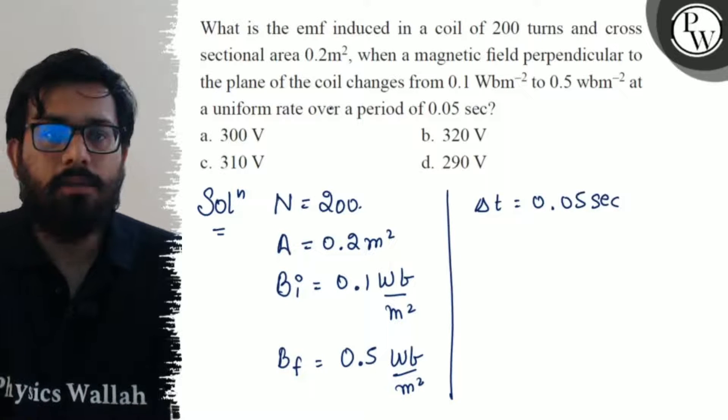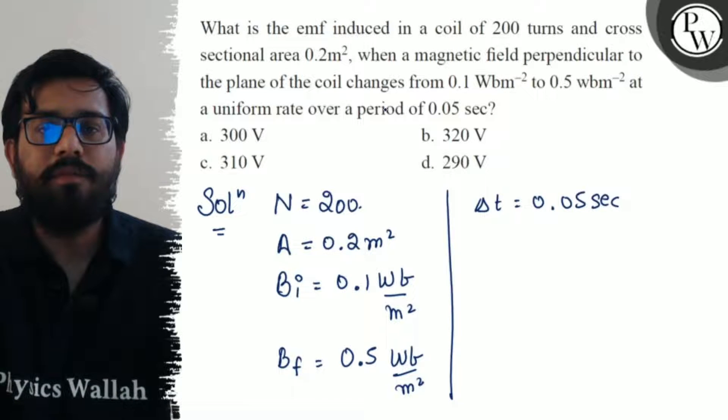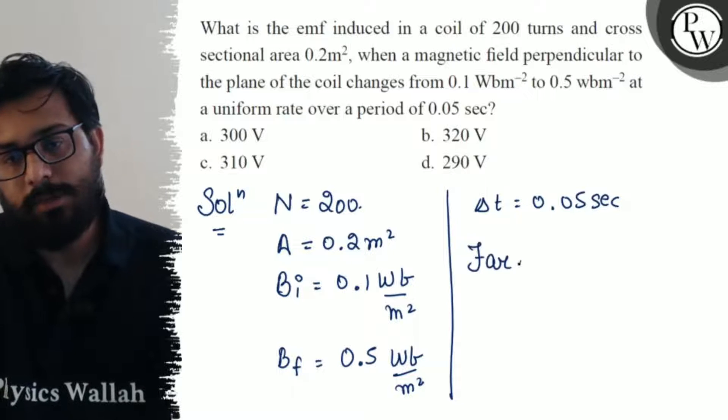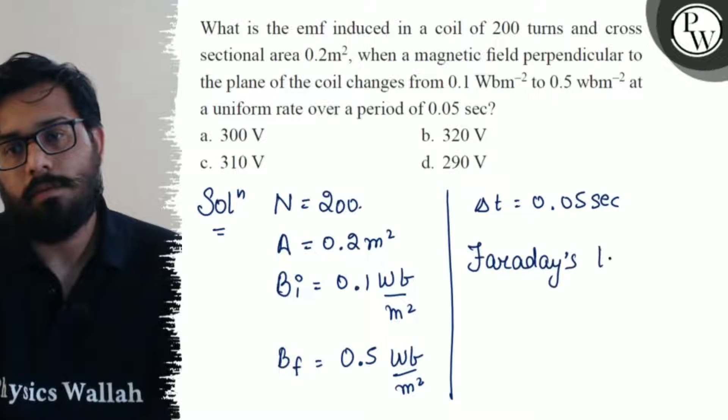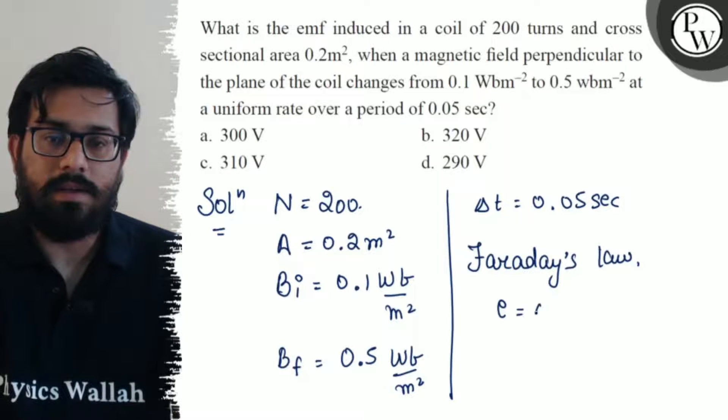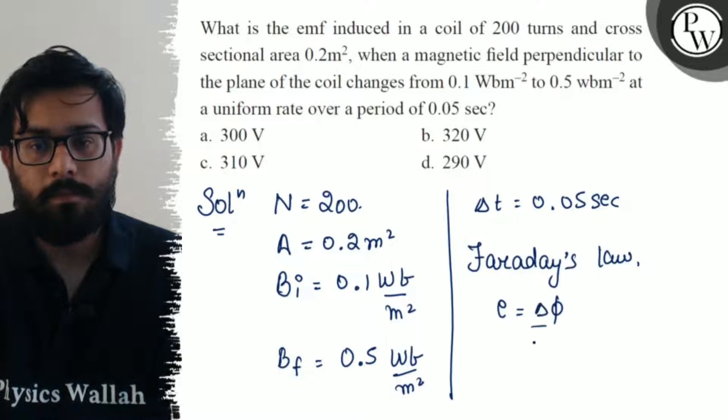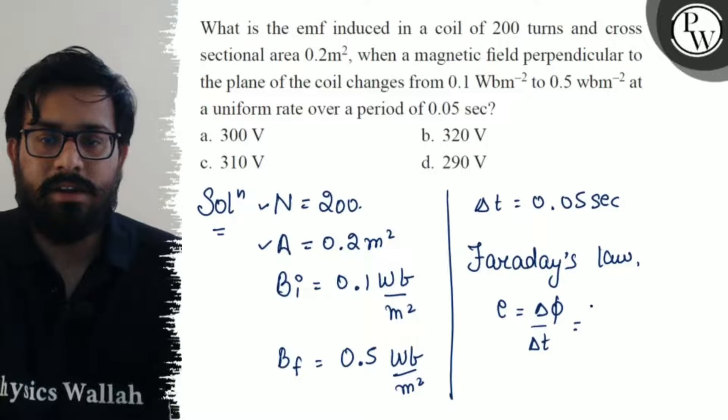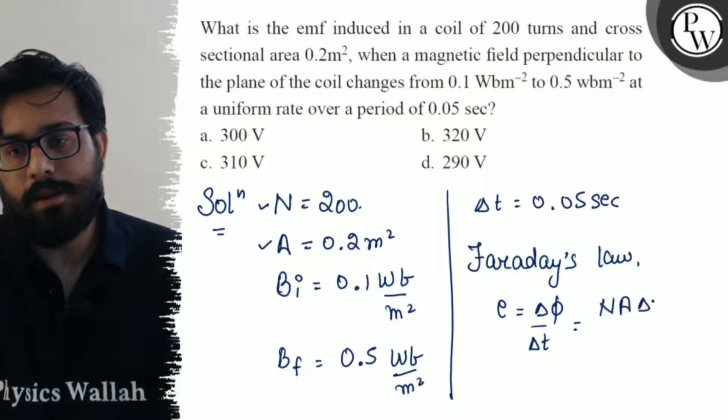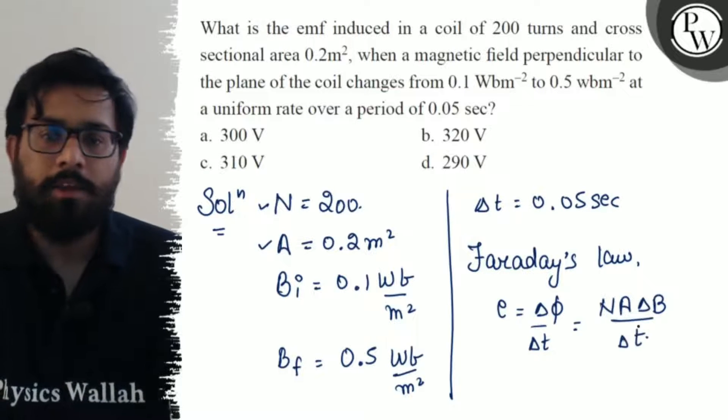Now you have to calculate the EMF induced. Now again we can use the concept of Faraday's law. You have the concept of E equals delta phi by delta t. Number of turns and area cross-sectional being constant values comes out, so N into A delta B by delta t.